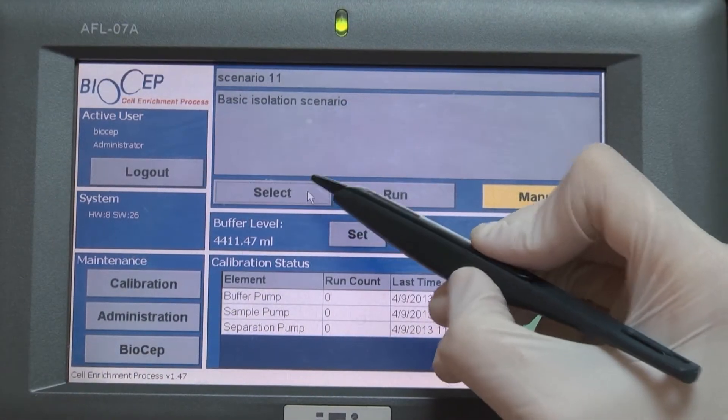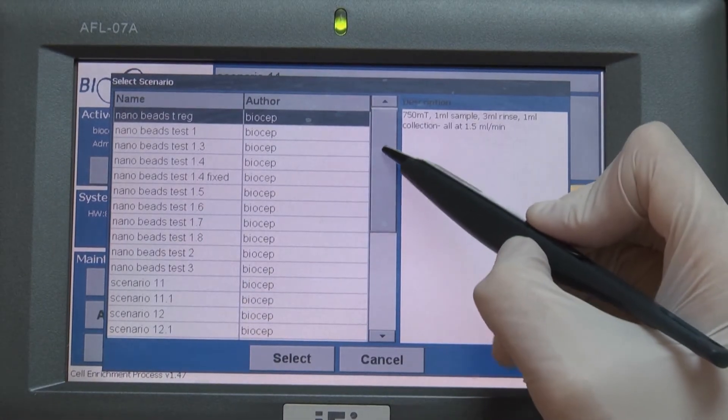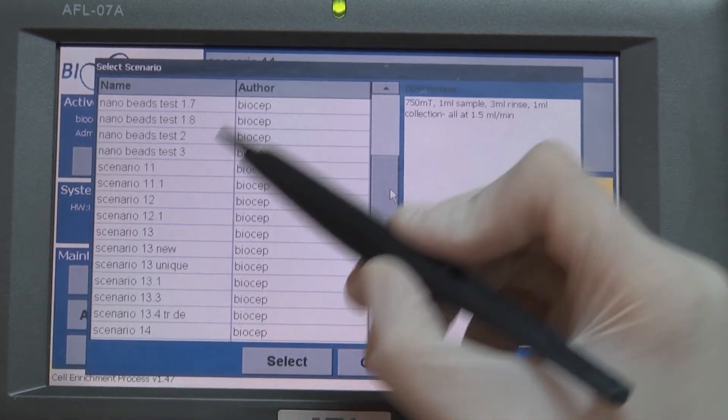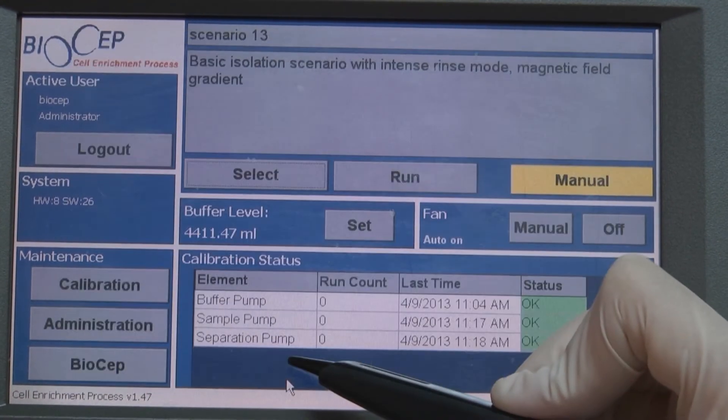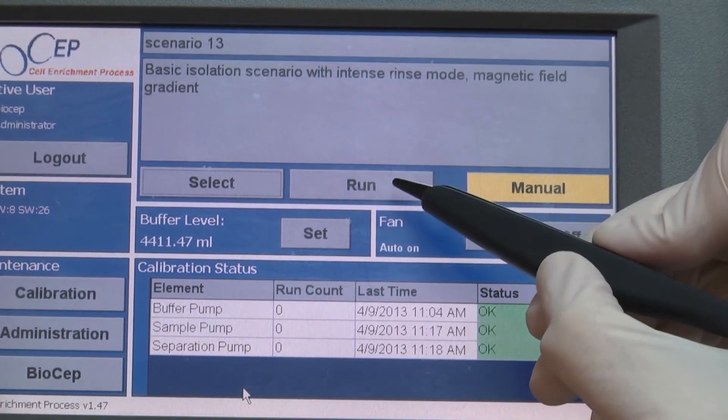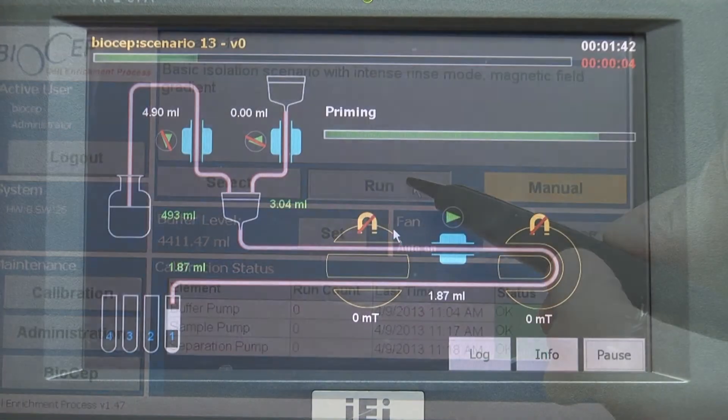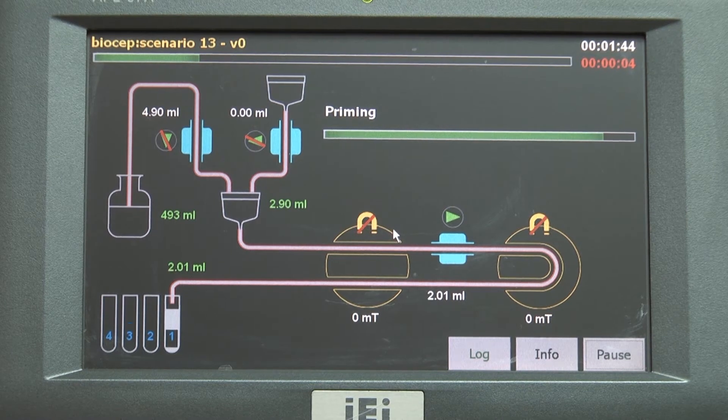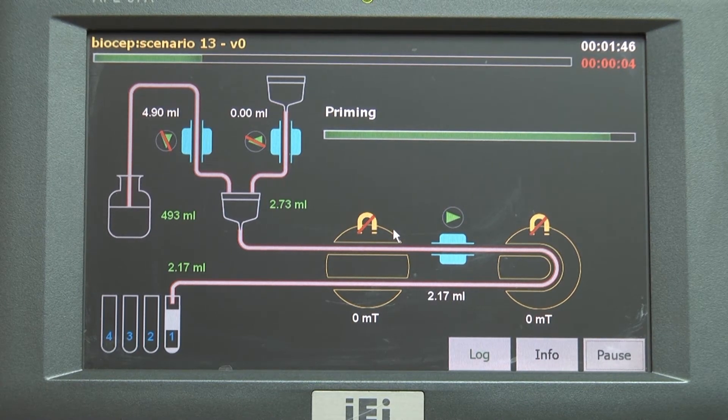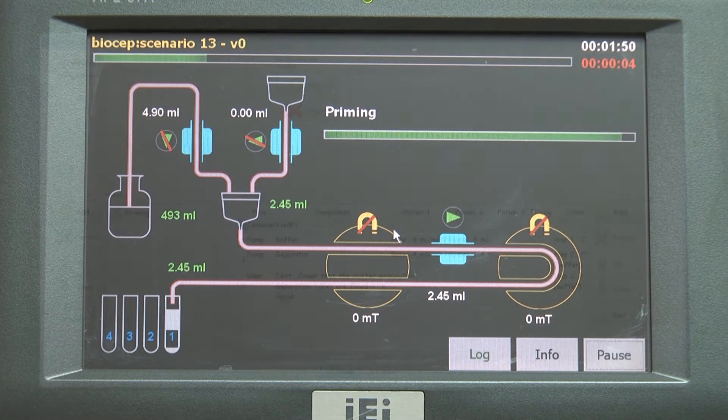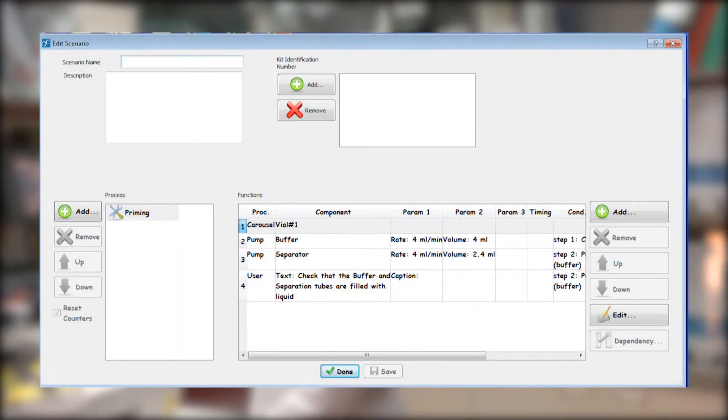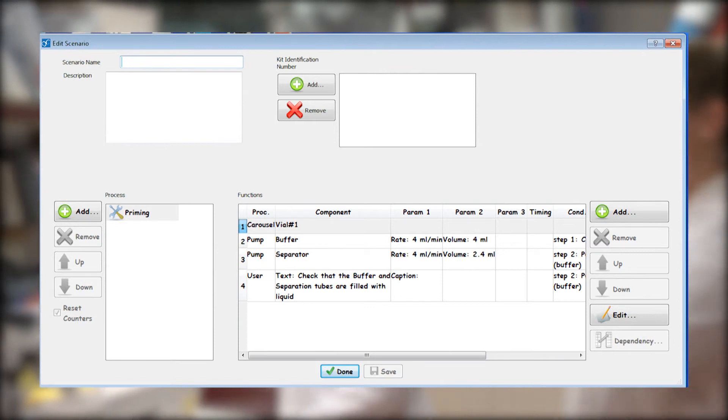Choose from any of the predefined isolation scenarios with the ease of a click, or use your own customized scenarios. Users can change separation parameters such as magnetic strength, flow rates or volumes on the touch screen software. The touch screen also portrays the entire process and progress in an easy to understand graphical manner. Unique customized protocols can be created on the separately supplied PC Scenario Creator software.